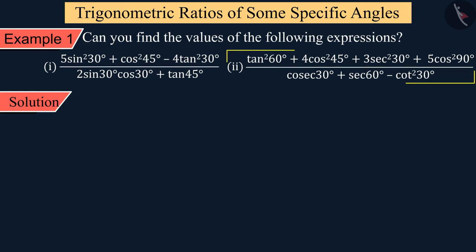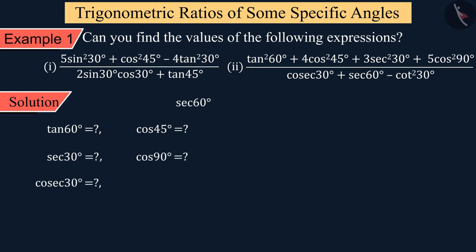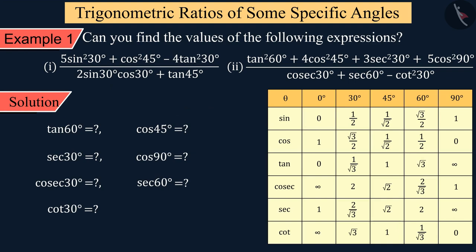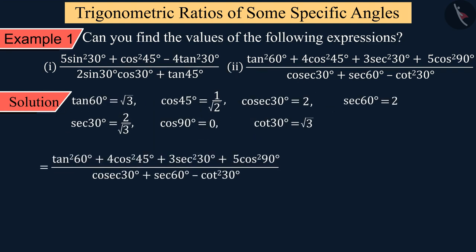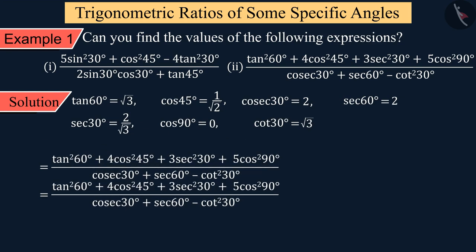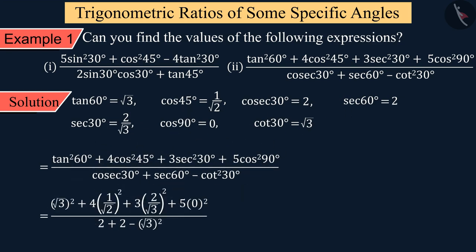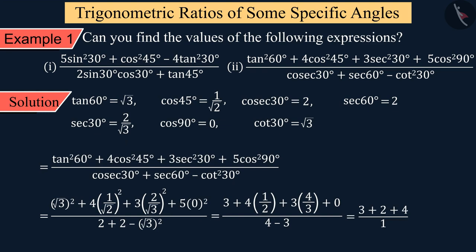Similarly, for the second part of the example, we get tan 60°, cos 45°, sec 30°, and all other values with the help of the table, and solve by substituting into the above equation. This gives the value of the equation as 9.